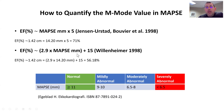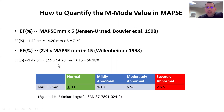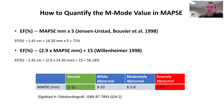Another equation, by Willenhammer, is: 2.9 times the MAPSE in millimeters, plus 15. Plugging in our numbers — converting centimeters to millimeters, multiplying by 2.9, and adding 15 — we get 56.18%. An important thing to note: these are estimations.